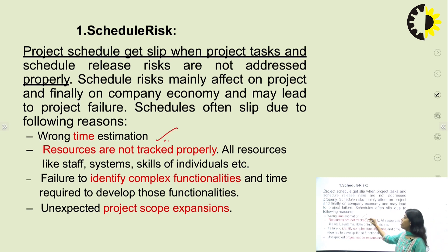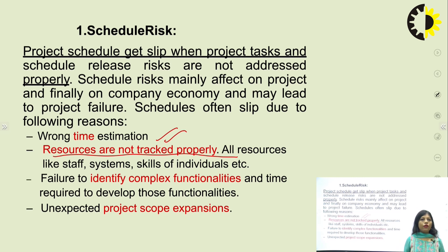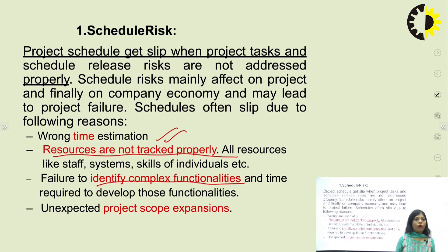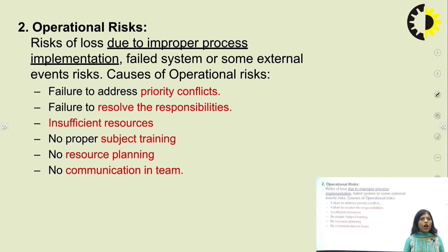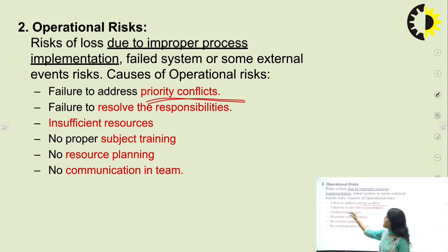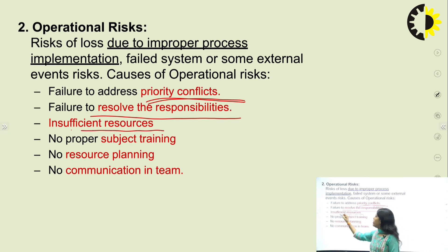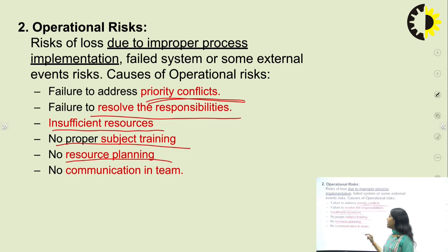Reasons for scheduled risk include wrong time estimation, resource problems, failure to identify complex functionalities and the time required to develop them, and unexpected project scope expansions. Operational risk is the risk of loss due to improper process implementation, failed systems, or external events. Reasons for operational risk include failure to address priority conflicts, failure to resolve responsibilities, insufficient resources, no proper subject training, no resource planning, and no communication in the team.